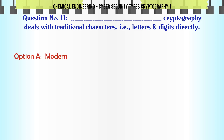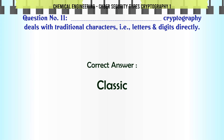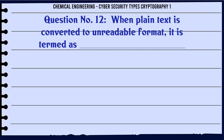Which type of cryptography deals with traditional characters, i.e. letters and digits, directly? A) Modern, B) Classic, C) Asymmetric, D) Latest. The correct answer is Classic.